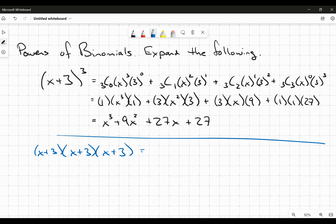So x plus 3 times x plus 3, if I just distribute, I'm going to get x squared plus 3x plus 3x plus 9, multiplied by x plus 3.